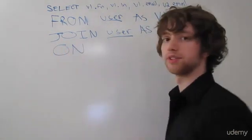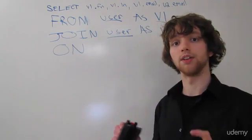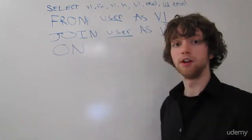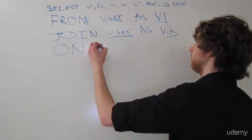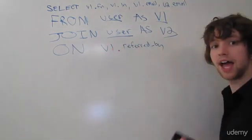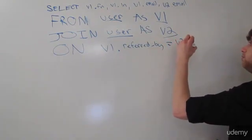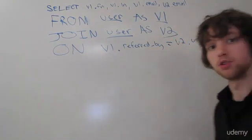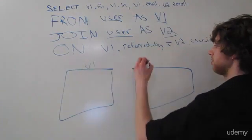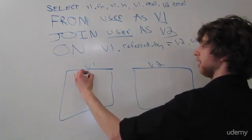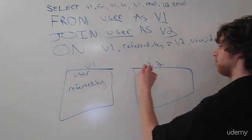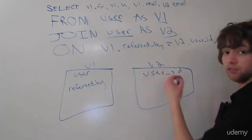Then you're going to do the on, which is going to say where we are going to join these things. Now this is where it can get really confusing because there are so many possibilities you can put right here. For this situation, we are going to take V1 and we're going to take the referred by column, and that is going to be the same as the V2 user ID column. So imagine literally two tables with the same exact data — here's V1, here's V2. We have a user ID, and within here we also have a referred by. That's going to reference the user ID of the V2 table.